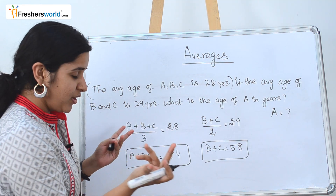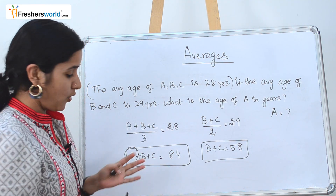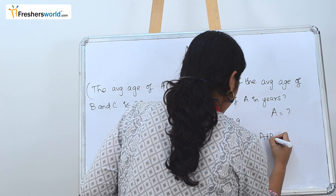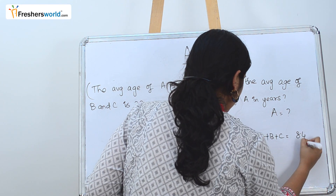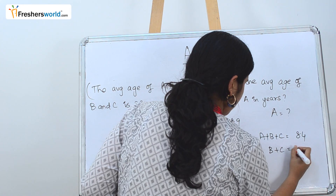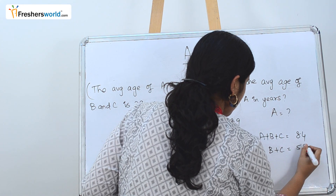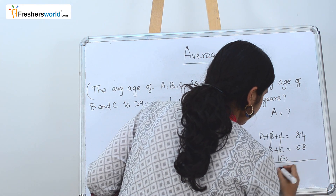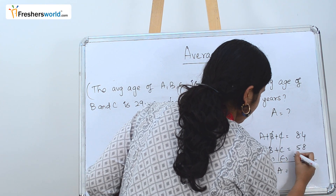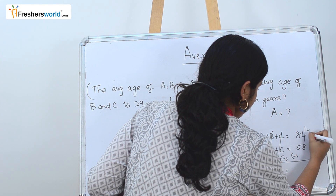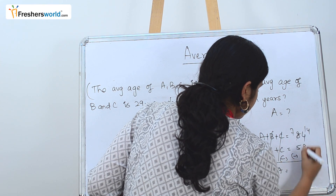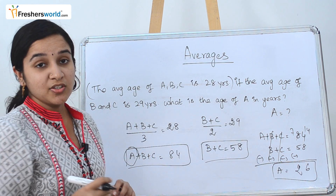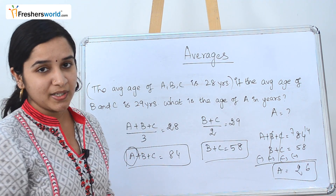Once we subtract the second equation from the first, we will obviously get the age of A. A plus B plus C equals 84, minus B plus C equals 58. B and C get cancelled, and we get the value of A, which is 84 minus 58 equals 26. So the age of A in years is 26 years.